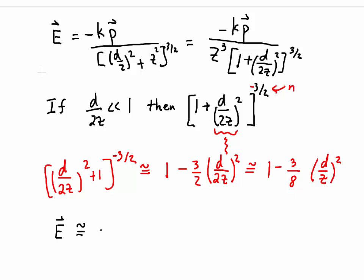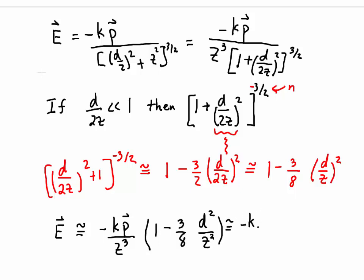Substituting that into the formula, I get that the electric field is approximately −KP/Z³ times [1 − (3/8)·D²/Z²]. Expanding this out: it's −KP/Z³ plus KP·(3/8)·D²/Z⁵. So this tells us that first, the electric field appears to fall as 1/Z³, but if you want a slightly better approximation — which slightly underestimates it — it's a bit better than that, with a correction term going as 1/Z⁵.